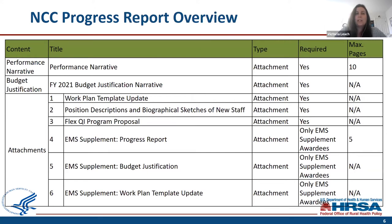As an overview of what to expect in your progress report: you have the performance narrative, a budget justification for year three FY 2021, a work plan template update, and updates on position descriptions and biographical sketches for new staff or vacant positions. We also have the Flex QI program proposal, which I'll get into in more detail later. For the eight of you who are awarded the EMS supplement, you also have to do a progress report, budget justification, and work plan template update specific to EMS.